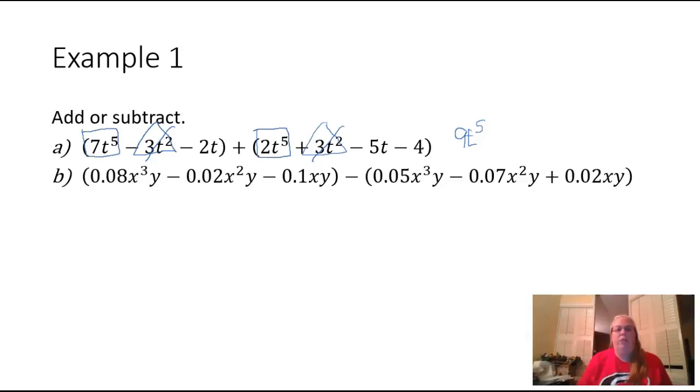In our polynomial at the front here, my next term is a negative two t. I look back here in the parentheses, I have a negative five t. So I'm going to add negative two plus negative five. That's going to give me negative seven of those t's.